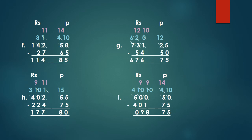Example G. 731 rupees 25 paise minus 54 rupees 50 paise. 5 minus 5 equals 0. Children, we cannot subtract 5 from 2, so we borrow. 1 becomes 0 and the 2 becomes 12. 12 minus 5 equals 7. Now, 4 cannot subtract from 0, so we borrow. The 3 becomes 2 and the 0 becomes 10. 10 minus 4 equals 6. Again, 5 cannot subtract from 2, so we borrow. The 7 becomes 6 and the 2 becomes 12. 12 minus 5 equals 7 and there is no number below 6, so 6 will come down as it is. As a result, we get the answer 676 rupees 75 paise.